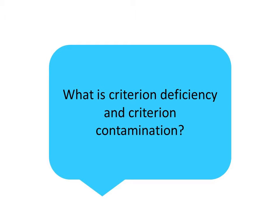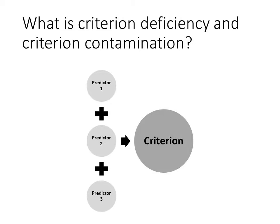In Part 4, we're going to explore two measurement concepts: criterion deficiency and criterion contamination. First, let's review the basics of predictors and criteria.